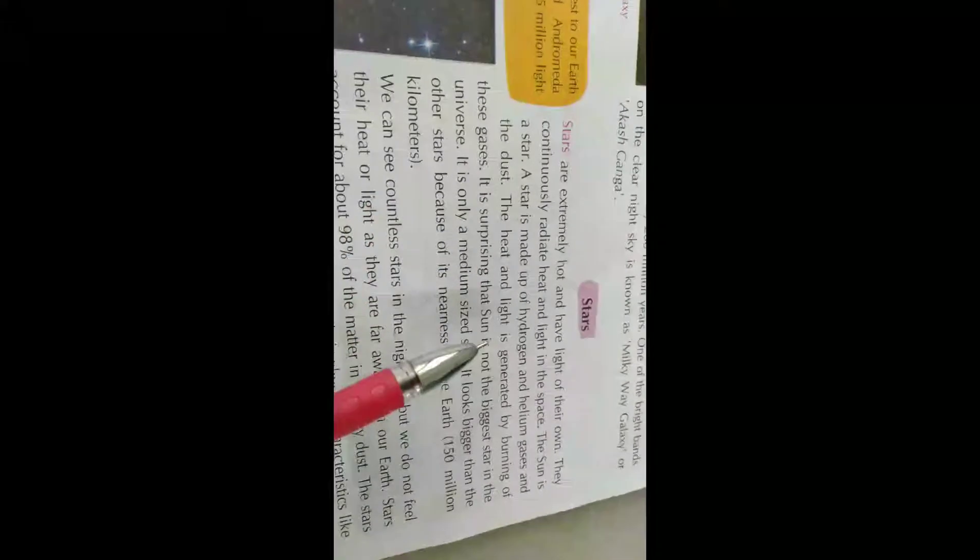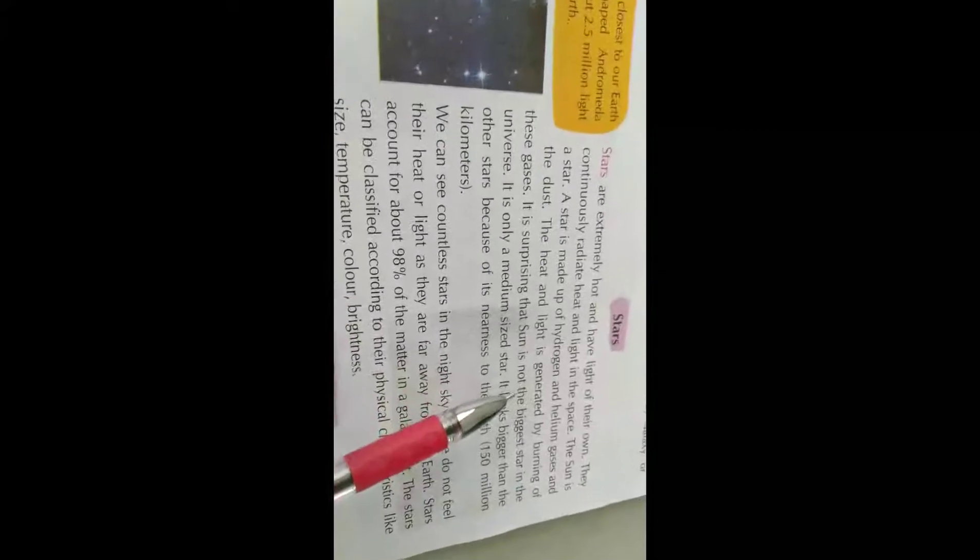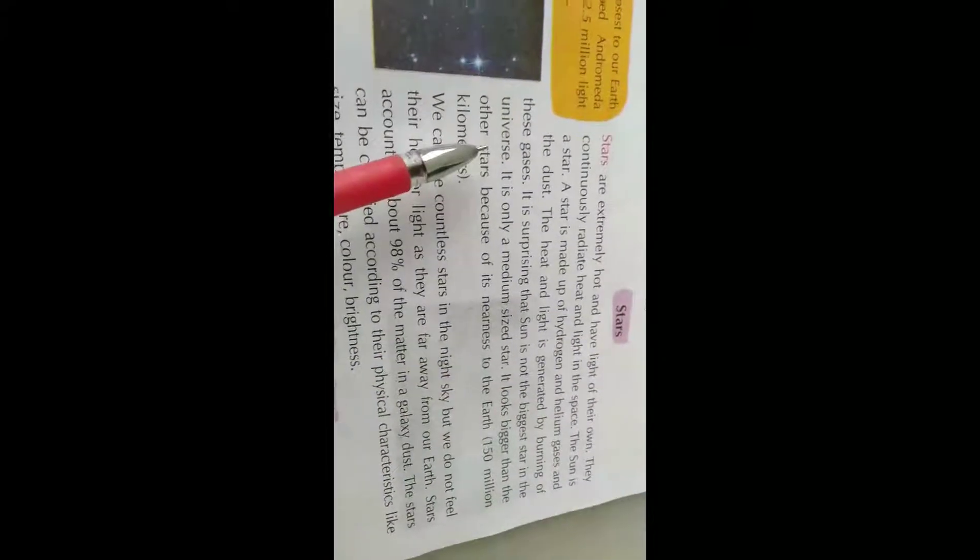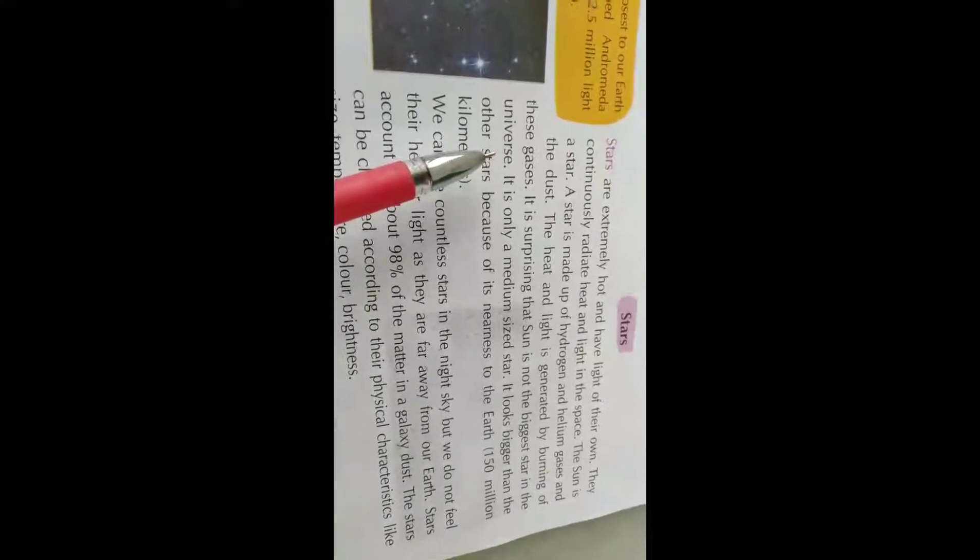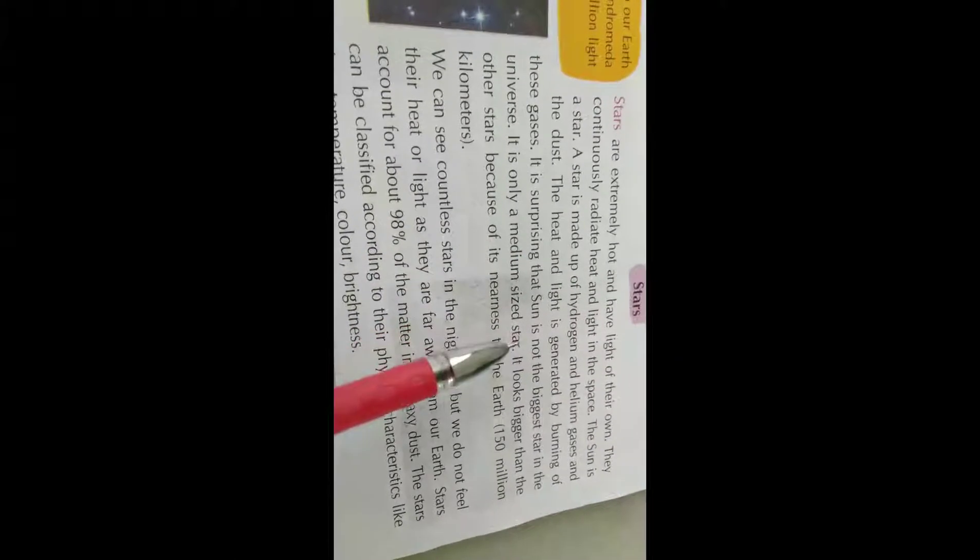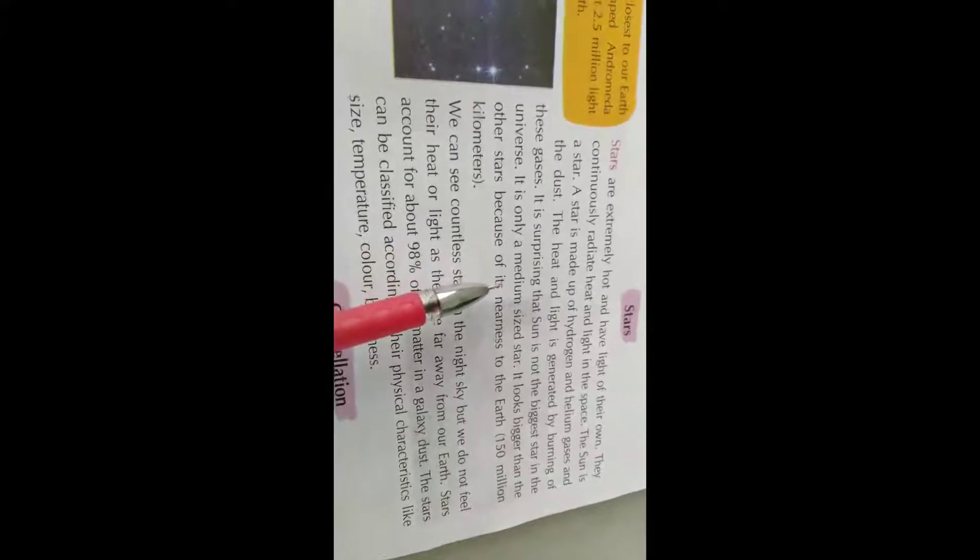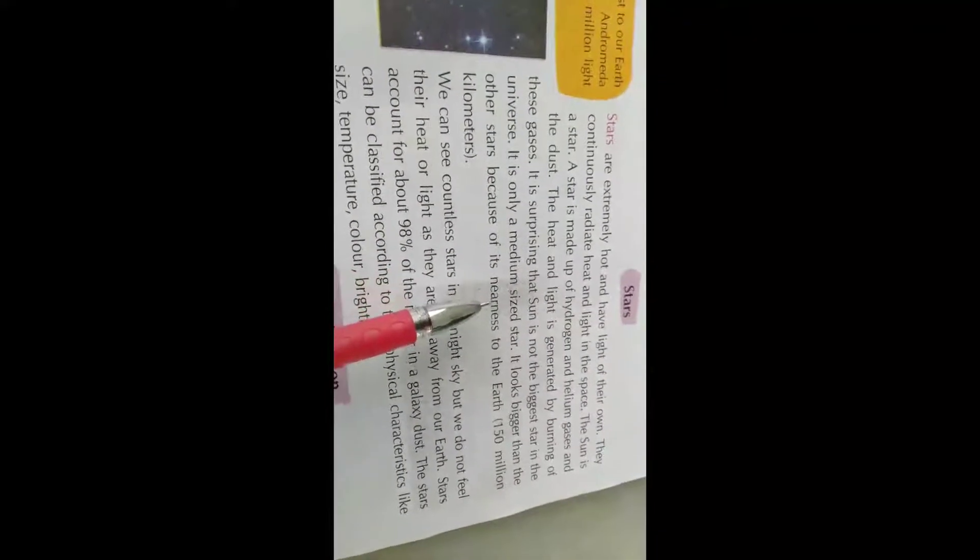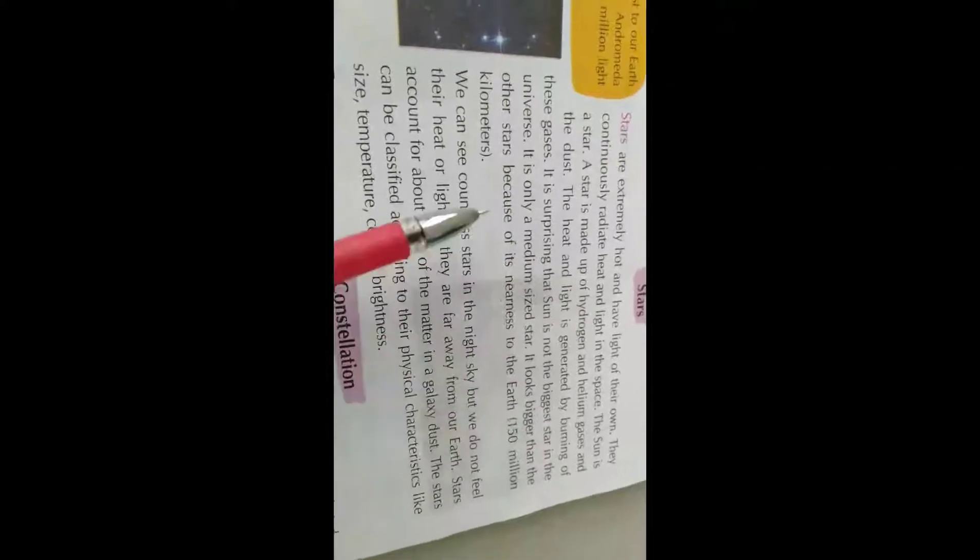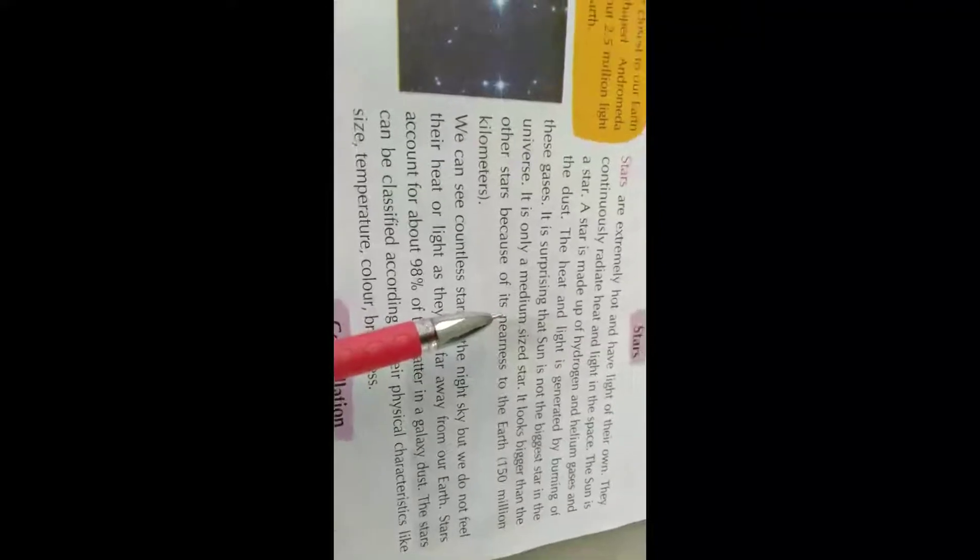It's surprising that the sun is not the biggest star in the universe. It is only a medium-sized star. It looks bigger than the other stars because it's nearest to the Earth, 150 million kilometers. This is why we show them thin.